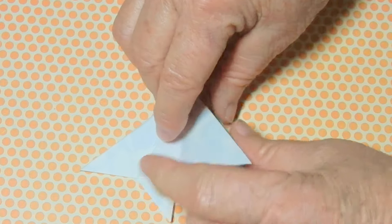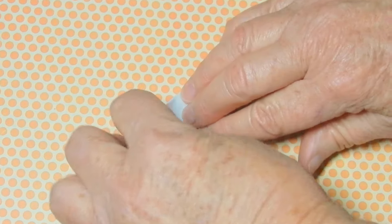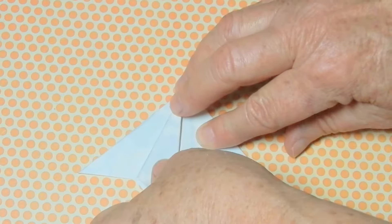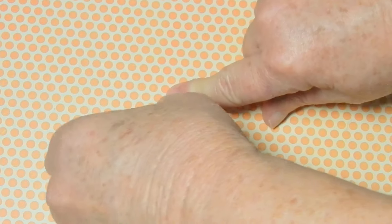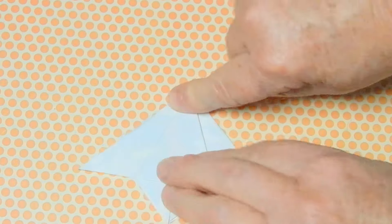Swing back, take this one, swing it over, fold and crease to the center and fold back.